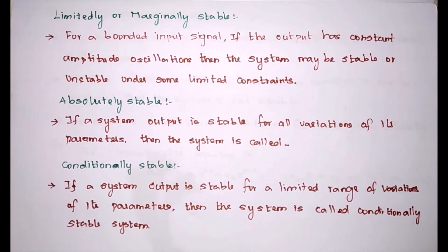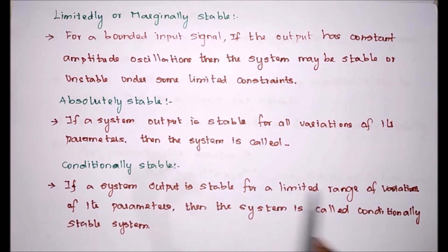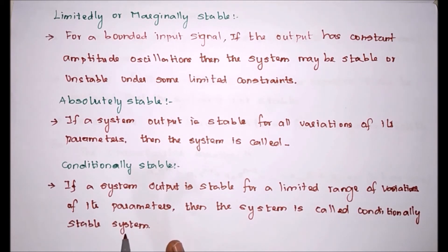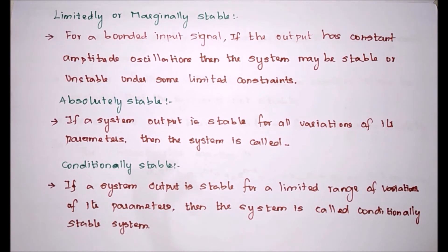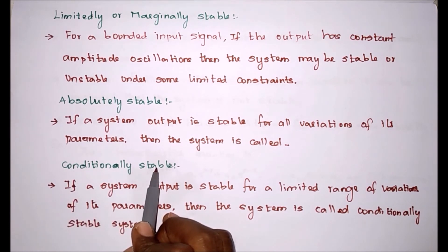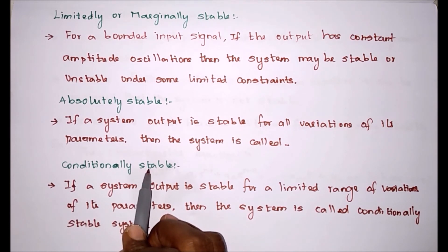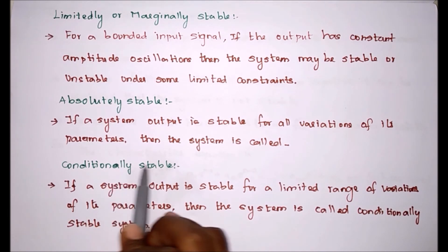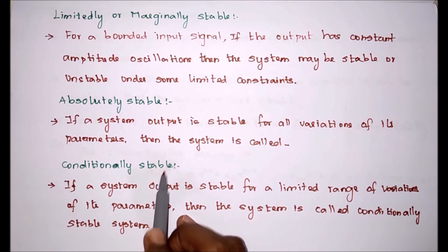The next one is conditionally stable. If a system output is stable for a limited range of variation of its parameters, then the system is called conditionally stable. It means the output is stable for a particular range of inputs or parameters only. Apart from that, it will be unstable. For certain conditions or certain ranges of its parameter, it will be in stable condition; apart from that parameter variation, it will be unstable.